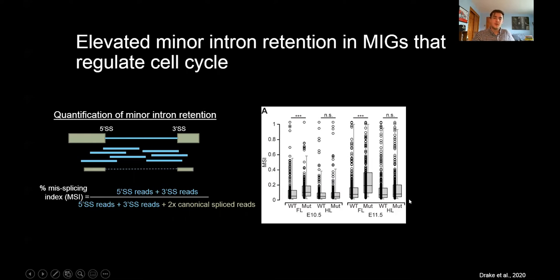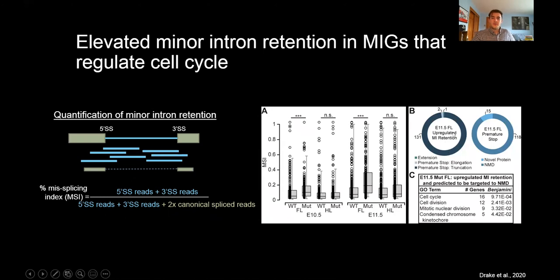In addition to overall intron retention, we can identify which MIGs in particular have individually elevated MSI. When we did this, we found that there were 134 MIGs in the E11.5 mutant forelimb that had significantly increased retention, of which 118 were predicted to undergo mRNA degradation through the nonsense mediated decay, or NMD pathway. When I identified the gene ontology terms that these genes enriched for, we found cell cycle, cell division, mitotic nuclear division, and condensed chromosome kinetochore, indicating that cell cycle defects were perhaps awry in these limb progenitor cells.